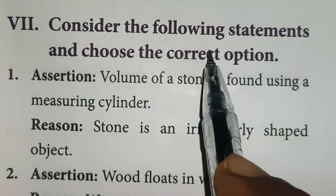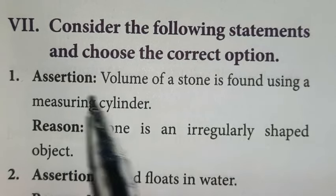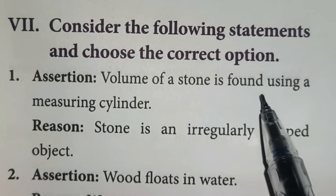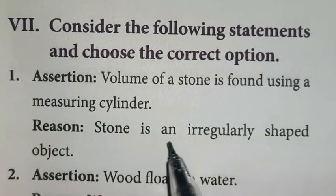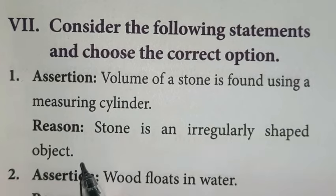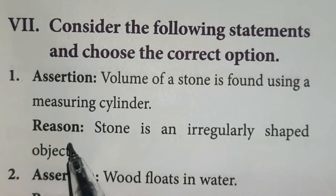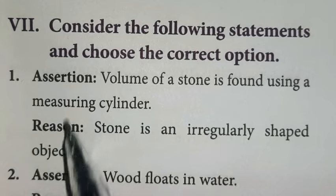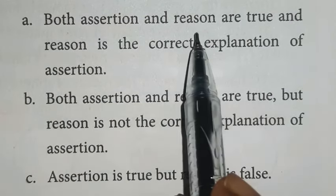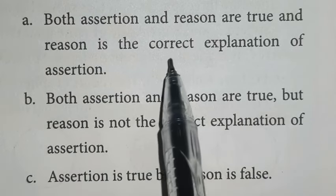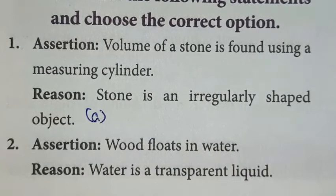Consider the following statements and choose the correct option. First one, assertion, volume of a stone is found using a measuring cylinder. True. Stone is an irregularly shaped object. So assertion and reason both are true and reason is a correct explanation of assertion. So according to this option, A is a right answer.